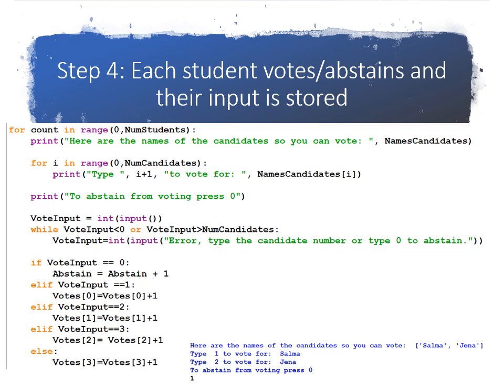Vote input equals int of input. So either they're going to type zero or one or two or three or four to vote for a candidate or abstain. And of course, there is a validation. If the input is less than zero or it's more than the number of candidates, there's an error. You need to type either a number that represents the candidate or zero to abstain.